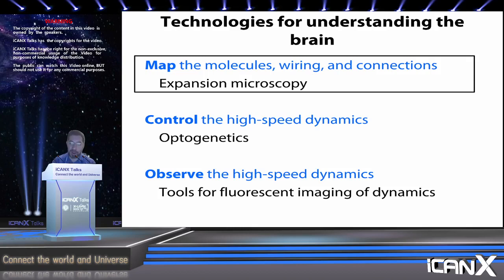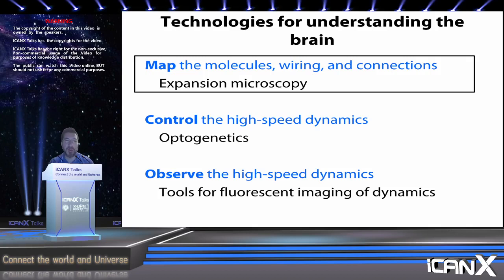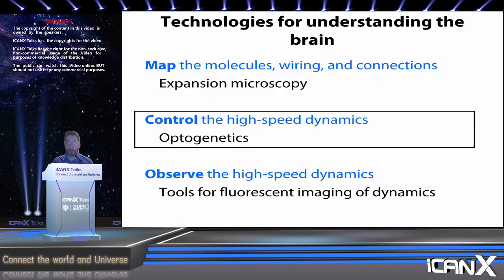In the second half of the talk, I want to address a key limitation of expansion microscopy: it can only be done on preserved cells or tissues. After all, you cannot expand a living thing. How can we see and control biological processes in a living cell or a living brain? First, I'll tell you about control — how can we control high-speed dynamics in biological systems?